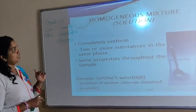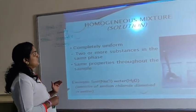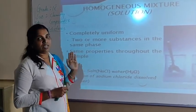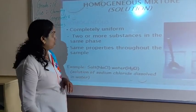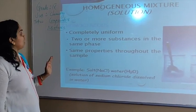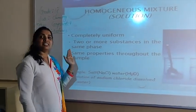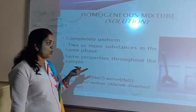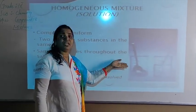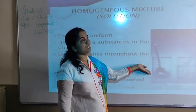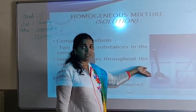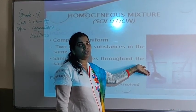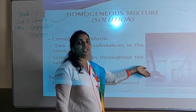Homogeneous mixtures are mixtures that have uniform composition throughout — we cannot identify the individual substances in the mixture. The substances are completely uniform and exist in the same phase. For example, if you dissolve salt in water or sugar in water, you get a completely transparent solution where you cannot identify the different phases or separate components.